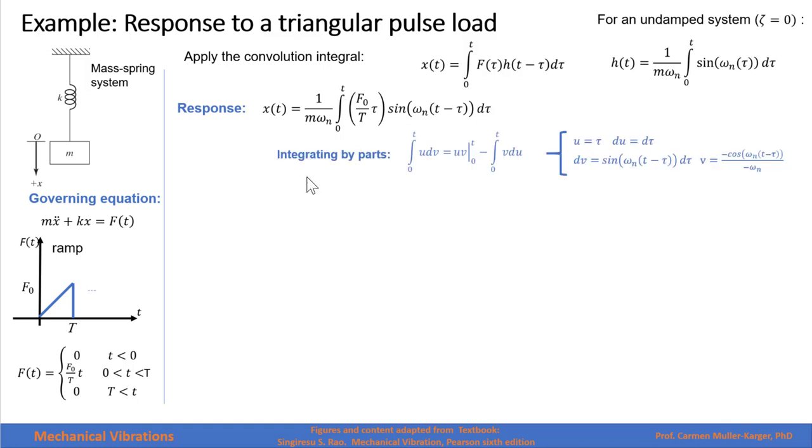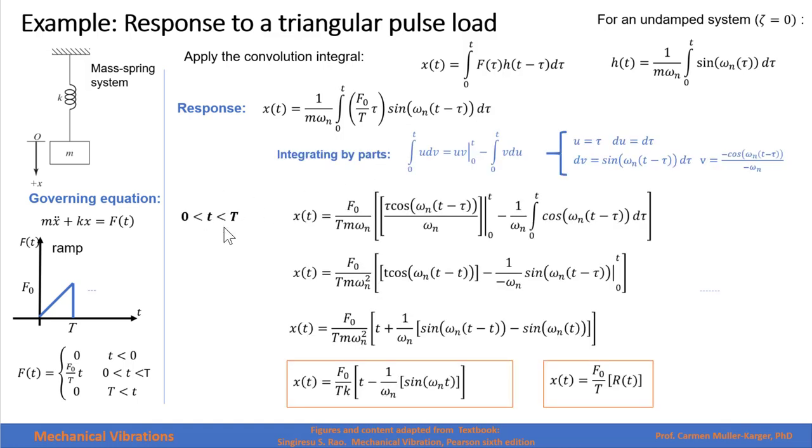This response will be valid only for time less than capital T. If we integrate by parts, we name u, for example, tau. And we name dv our function sine of omega t, t minus tau. And then we apply our integration by parts rules where we find du and dv, and we integrate dv to find v.